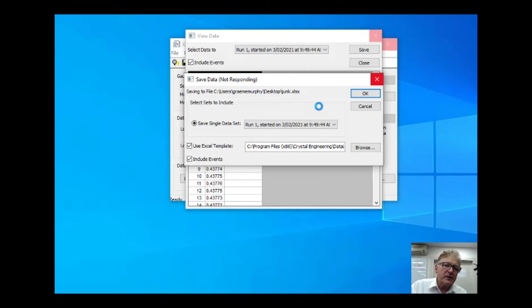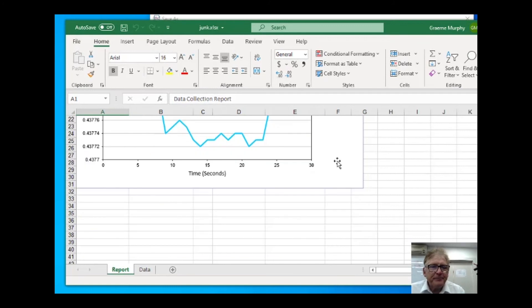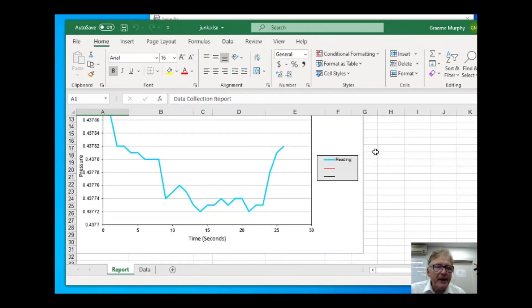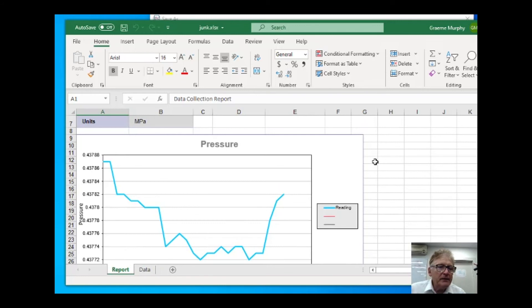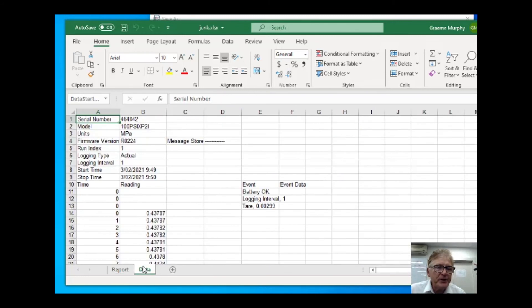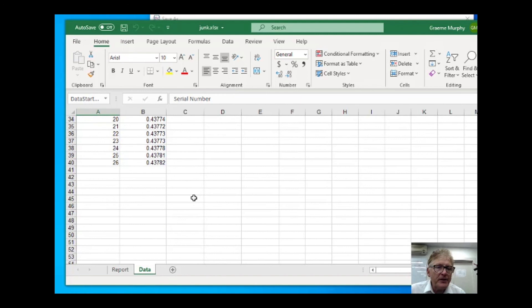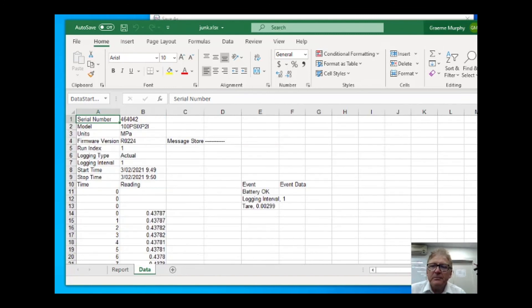Now, provided you have Excel on your PC, it now runs Excel with a particular Excel template. They have a default Excel template that they give you that includes graphs, etc. And so we're just waiting for Excel to run on this laptop. Right. Finally, it loaded. Here we have the output in Excel. And here's the raw data. It's got the graph there, etc. So it is simple as that.